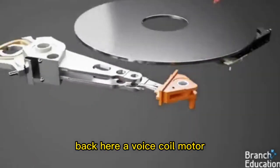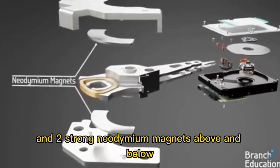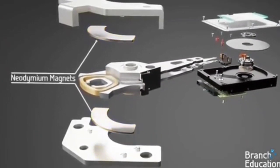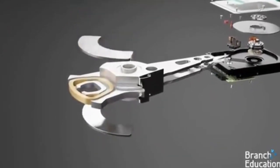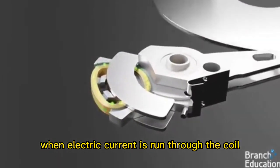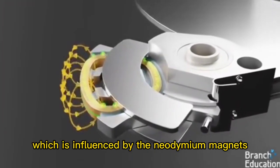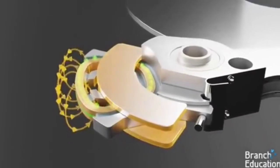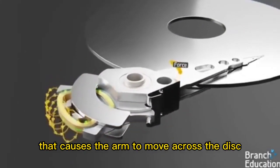Back here, a voice coil motor composed of a coil of wire and two strong neodymium magnets above and below is used to move the entire arm stack assembly. When electric current is run through the coil, it creates an electromagnet which is influenced by the neodymium magnets, thus generating a force that causes the arm to move across the disk.